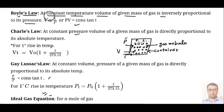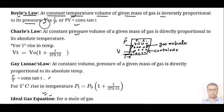So Boyle's law is saying that at constant temperature — if we have fixed T, temperature is constant — then volume is inversely proportional to pressure.